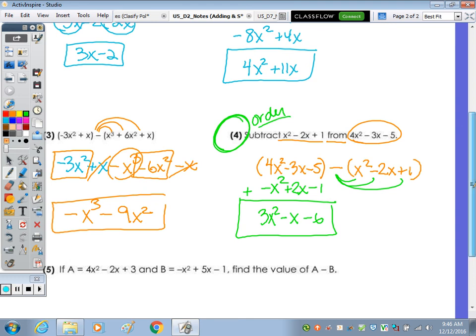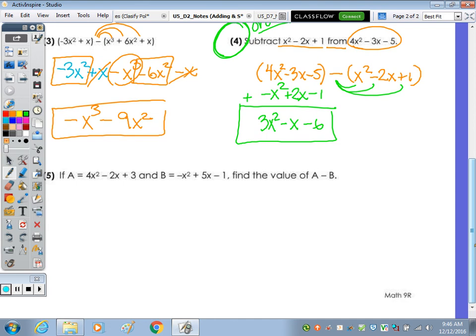And then last, if a equals the trinomial 4x squared minus 2x plus 3, and b is the trinomial negative x squared plus 5x minus 1, find the value of a minus b. So that just means to subtract the two trinomials. So the trinomial for a is 4x squared minus 2x plus 3. And then we subtract. In the order they said, a minus b, subtract the trinomial for b, which is negative x squared plus 5x minus 1. So as I distribute, I'm going to stack.